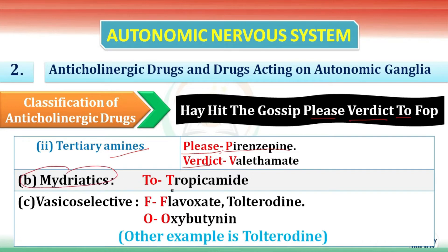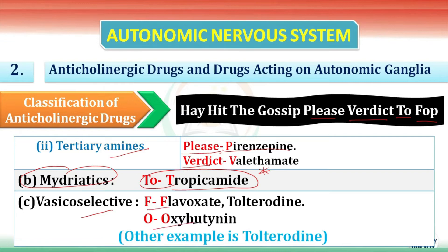'Two' in the mnemonic stands for mydriatics. The drug name is cyclopentolate — students, mark this as important because it is frequently asked in exams. The next is vesico-selective drugs: flavoxate and oxybutynin.